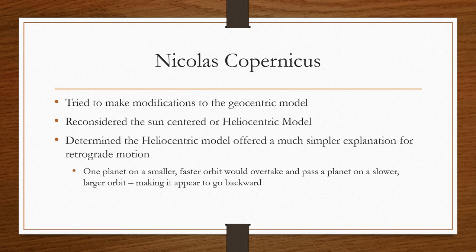Then we get to Nicholas Copernicus. He was a Polish physician and lawyer, and he tried to make many modifications to the geocentric model before deciding to reconsider the sun-centered model, or heliocentric model. In the heliocentric model, the sun is the center of the solar system rather than the Earth, and all orbiting bodies, including Earth, actually orbit the sun. This model offered a much simpler explanation for retrograde motion. One planet on a smaller, faster orbit, overtaking and passing a planet on a slower, larger orbit.